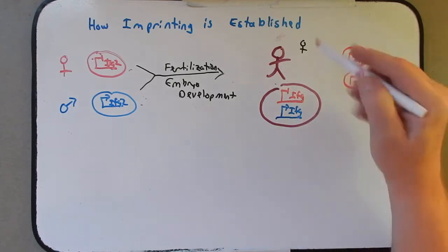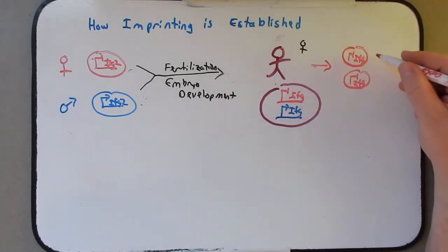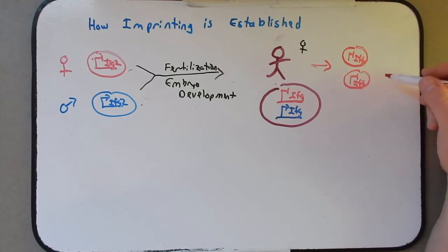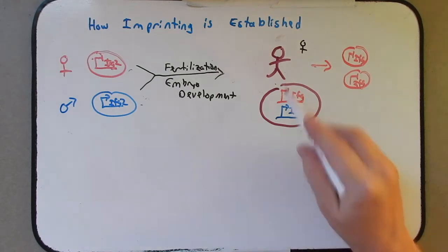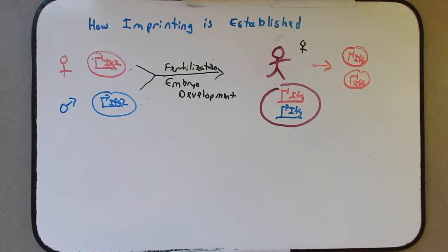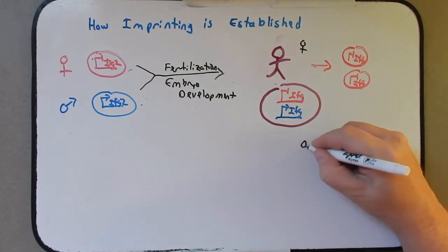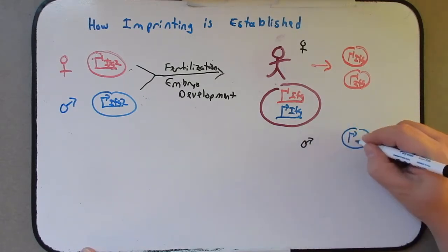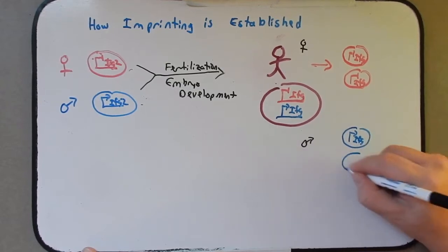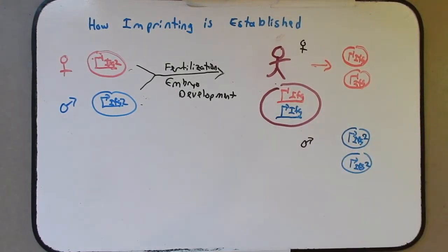And then what happens as she makes gametes to make sure that all of her gametes have a down-regulated or non-expressed copy of IGF too. And the opposite would be true if the individual were to be male. If they were male, their gametes would all have to be expressing IGF too. How do we make sure that happens? And that's what we're going to focus on.